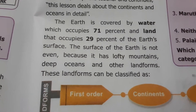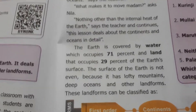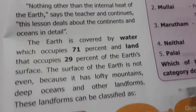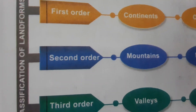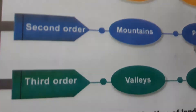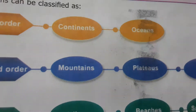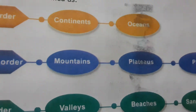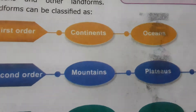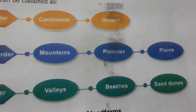Each and every person knows what the oceans and landforms in the world are, so it is very easy to recall and practice. There are different types of landforms classified into first order, second order, and third order. Under the first order, continents and oceans come. Mountains, plateaus, and plains are kept under the second order.